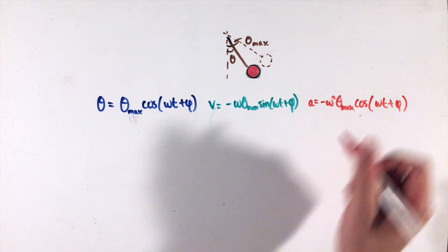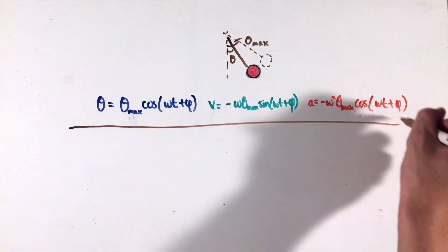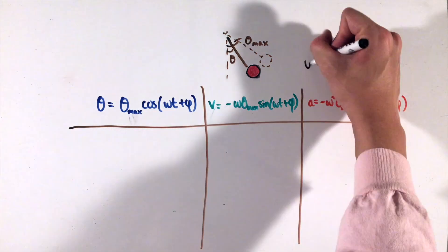While these may seem complicated at first, all of these equations show the cyclical motion, or sinusoidal motion, the object has as it swings back and forth repeatedly, with some coefficients like the angular displacement and the angular frequency tossed in the mix.